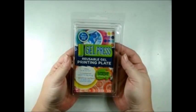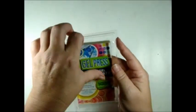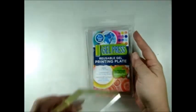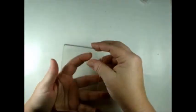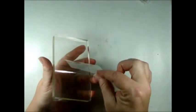To do the packing tape transfer, first take out your gel press printing plate from its package and remove the plastic covering that comes on top of your gel plate.